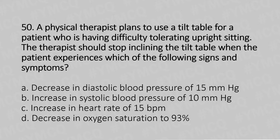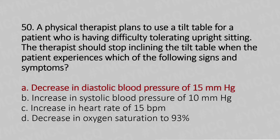Option A: Decrease in diastolic blood pressure of 15 mmHg. Option B: Increase in systolic blood pressure of 10 mmHg. Option C: Increase in heart rate of 15 bpm. Option D: Decrease in oxygen saturation to 93%. And the answer is Option A: Decrease in diastolic blood pressure of 15 mmHg.